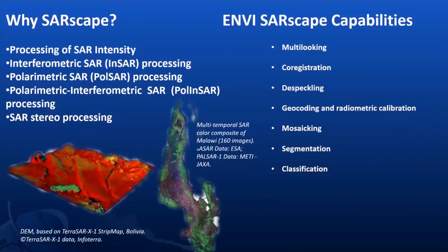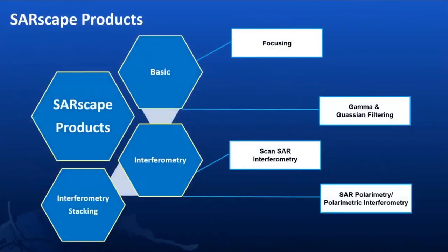SARscape capabilities include co-registration, classification, segmentation, decoding, and radiometric calibration. SARscape comes with several modules: the basic module, interferometric module, and stacking module. The basic module includes processing steps for generation of SAR products based on intensity, along with focusing and filtering sub-modules for refocusing and filtering SAR data.